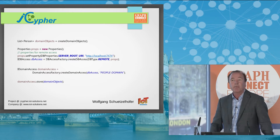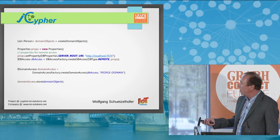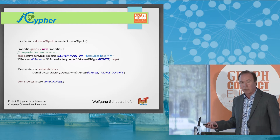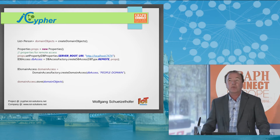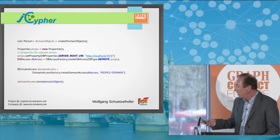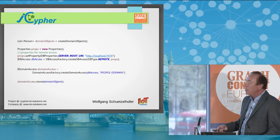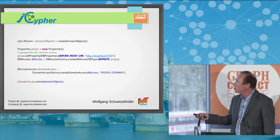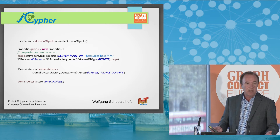We are working with domain models and domains, so we also need a domain access, which we create by means of a factory. The domain — a business domain — must have a unique name within a database. In our case, the name is people domain. Now with the domain access at hand, we simply call store given the domain objects, and the entire graph of domain objects is stored into the database.